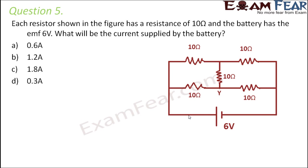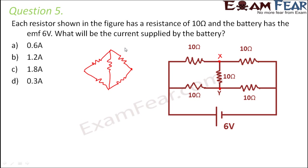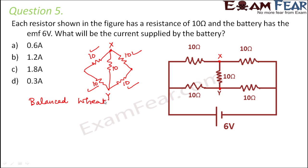Calculating the equivalent resistance is your first task. Just focus on this part of the circuit — let's name this point X and this point Y. If you look at this portion of the circuit, it is like a Wheatstone bridge, as good as this arrangement. Normally this is how the Wheatstone bridge looks, but since it is present in this pattern, many of us might not recognize it. These are all 10 ohms. So this is just like a Wheatstone bridge. Looking at it, P by Q equals R by S, meaning the Wheatstone bridge is balanced.